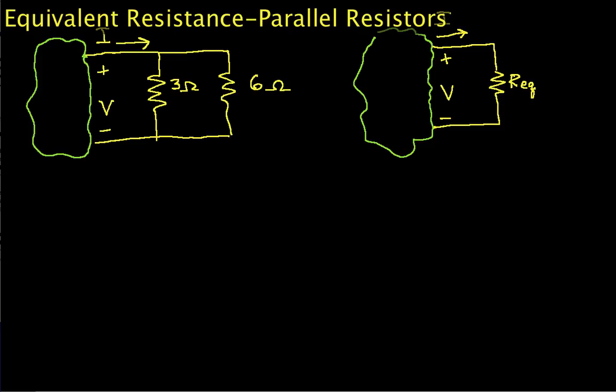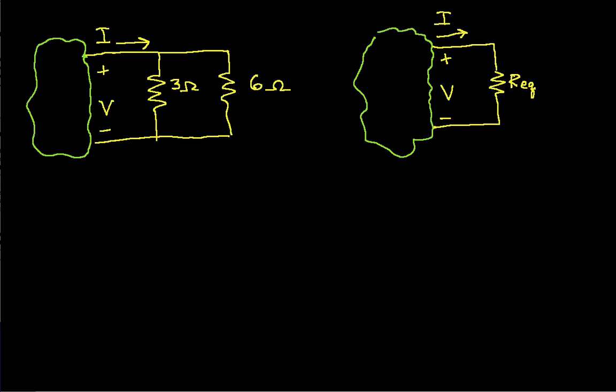So the first thing we need to do is talk about equivalence. If you've already looked at the equivalent resistance for series resistors, then this will be a bit of a review. But the question is how can we say that a single resistor, our equivalent, is equivalent to this parallel combination of the 3 ohm and the 6 ohm resistor.